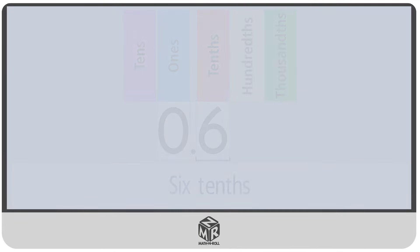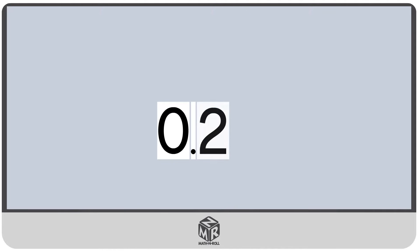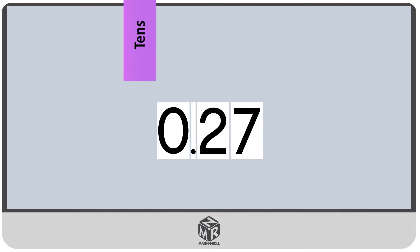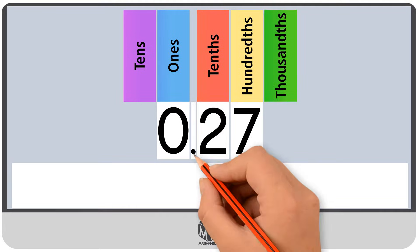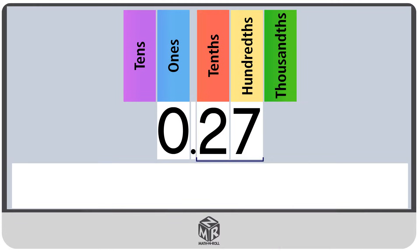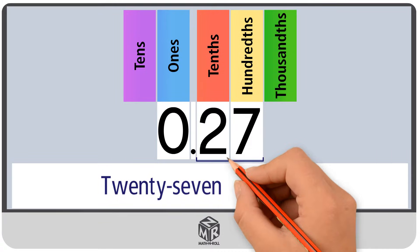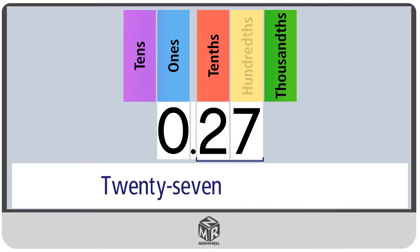Let's do another example. 0.27. We start by writing the decimal part in the same way that we would write a whole number. So we write 27. Then we write the place value of the last digit. The last digit is 7, and it's in the hundredths place. So we write 27 hundredths.